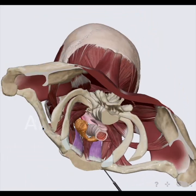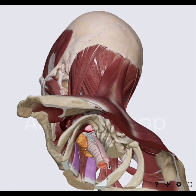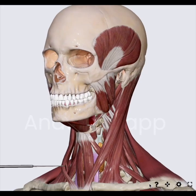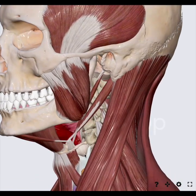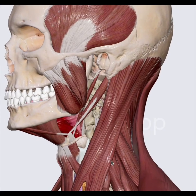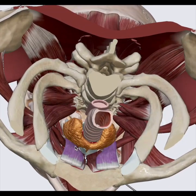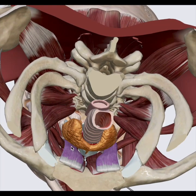Let's see where it is. This is the origin — that is the posterior aspect of the manubrium of the sternum, can you see over here? And where does it get inserted? It gets inserted at the oblique line of the thyroid cartilage of the larynx. One thing I would like to show you is its relation with the thyroid gland — this is the thyroid gland, and the muscle is just above the gland.